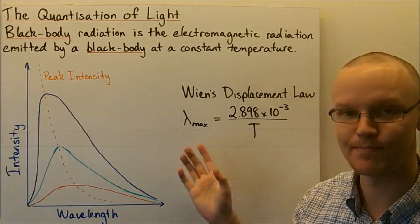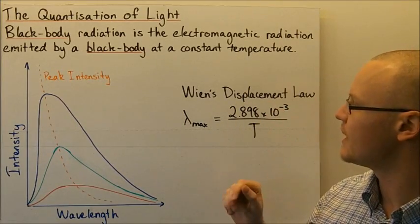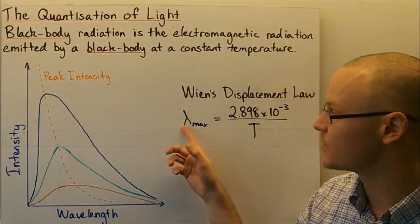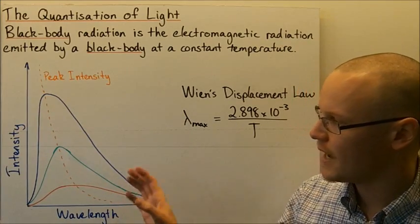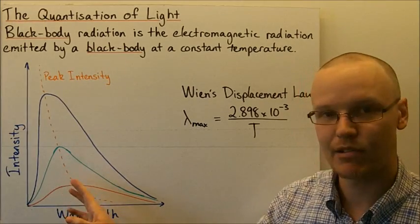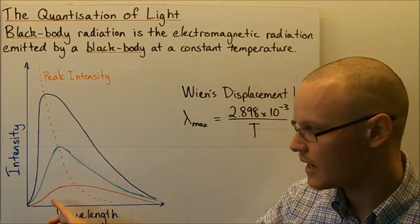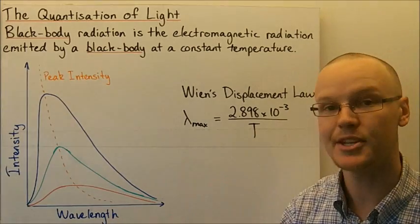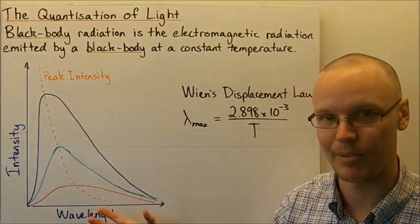The peak wavelength decreases as the temperature increases, so there's an inverse relationship with temperature. That inverse relationship is called Wien's Displacement Law, and it relates the peak wavelength to a constant divided by the temperature. This graph shows that as the temperature increases, the peak wavelength may change, but there are still multiple wavelengths of black body radiation given off.